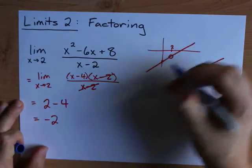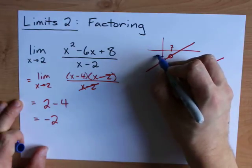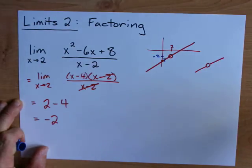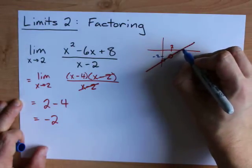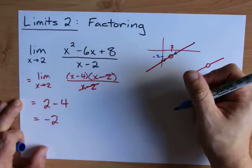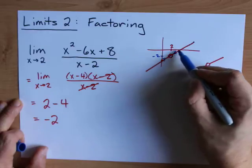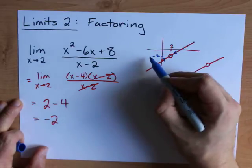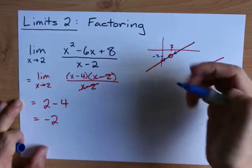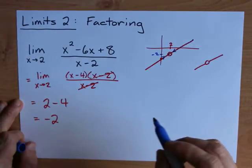If you follow this line from the left, it's getting closer and closer to negative 2 on the y. And if you follow this line from the right, it's getting closer and closer to negative 2. The limit as you approach positive 2 from either direction is negative 2. It's just that the function itself doesn't exist there because it's a removable discontinuity.